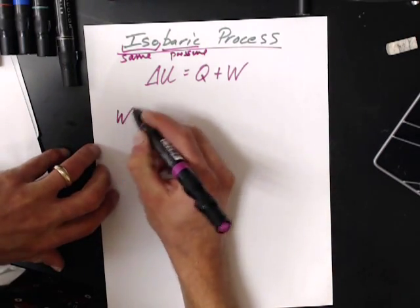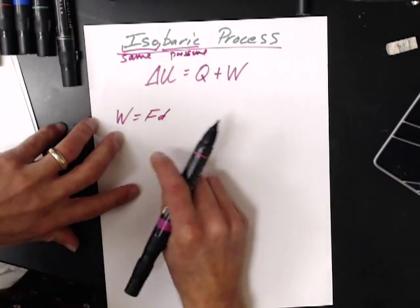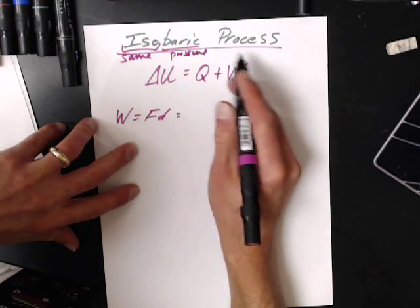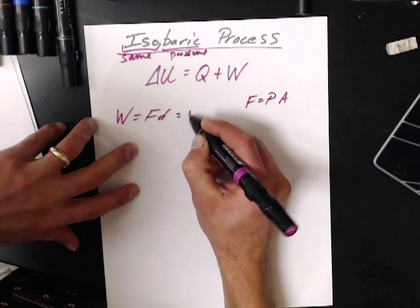So we need to do a little bit of derivation. Work is force times distance. We're dealing with gases, force is pressure times area.